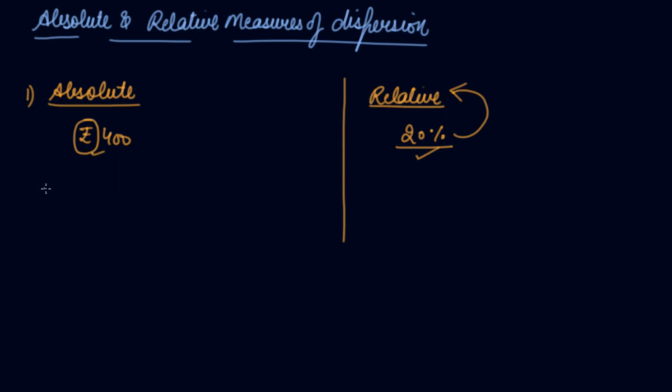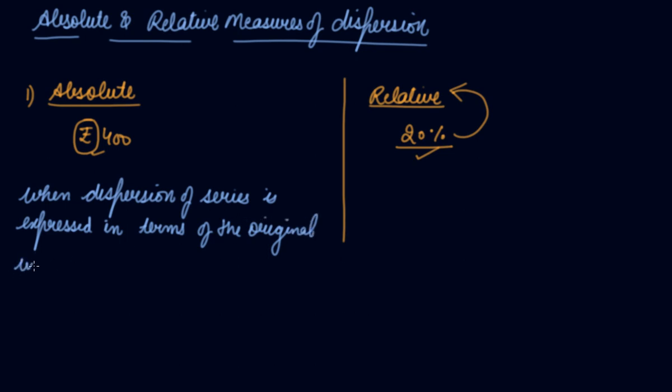So now let's understand. When dispersion of series is expressed in terms of the original unit of the series, it is called absolute measure of dispersion. See, the actual unit of wages is rupees. So whenever you are expressing anything in its original unit, it is called the absolute measure of dispersion.